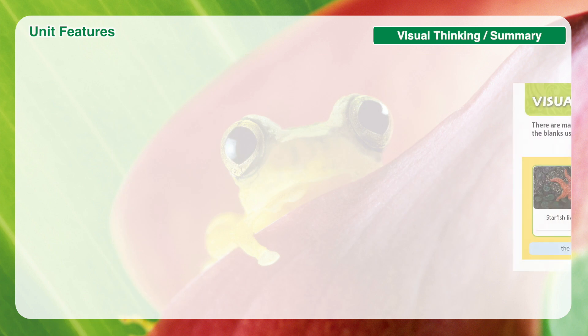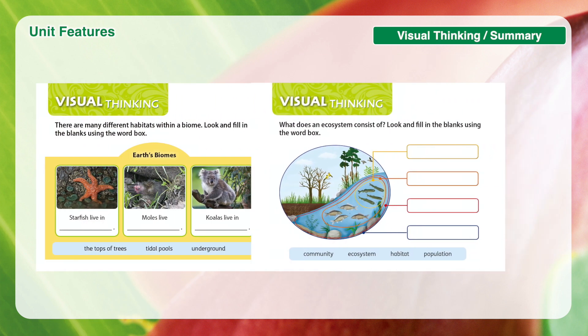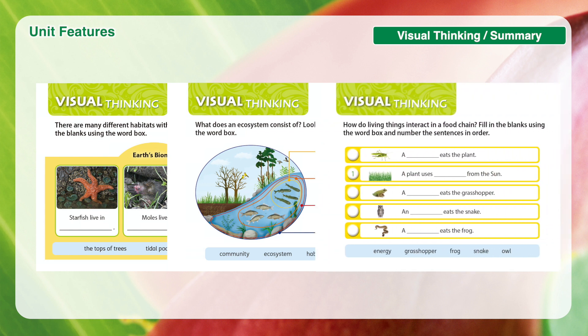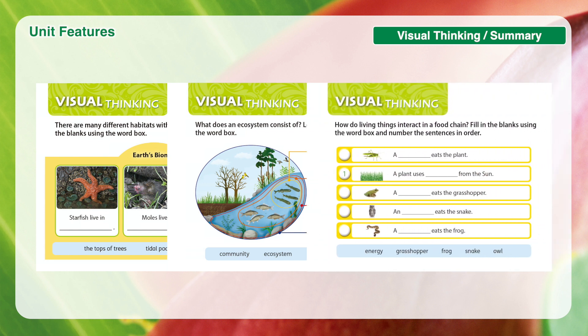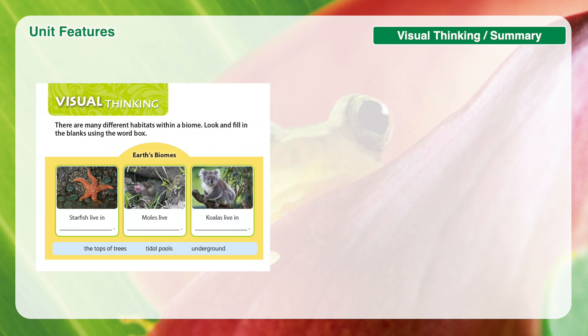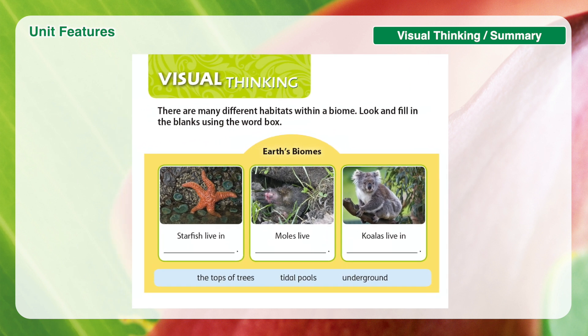The Visual Thinking section focuses on one of the two questions in the Think section and helps students visually organize their ideas through graphic organizers, such as diagrams and tables. This will enable students to improve their critical thinking skills.